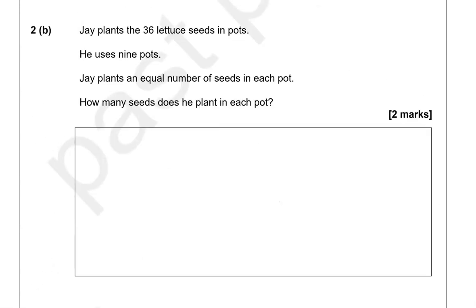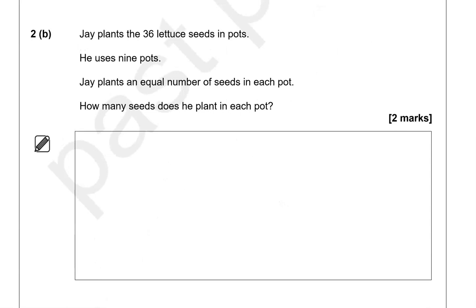Jay plants the 36 lettuce seeds in pots using 9 pots. Jay plants an equal number of seeds in each pot — how many seeds does he plant in each pot? There are 36 seeds and 9 pots, so we do 36 divided by 9, which equals 4. Because 4 times 9 gives us 36. You could do this with a calculator or from knowing the 9 and 4 times tables.